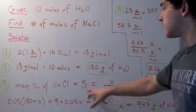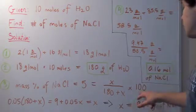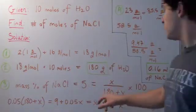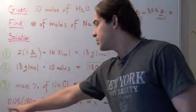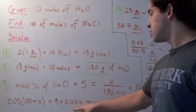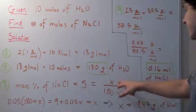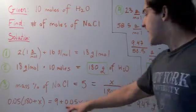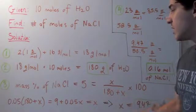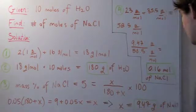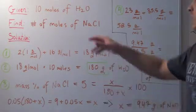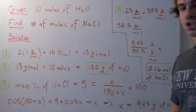This is the formula for mass percentage. Next, we do a little algebra. We divide 5 by 100 to get 0.05, then bring the denominator over and multiply: 0.05 times (180 plus x), which gives us 9 plus 0.05x. We equate that to x, then solve: 9 equals 0.95x. Dividing by 0.95, we get 9.47 grams of sodium chloride needed to create a 5% by mass solution.